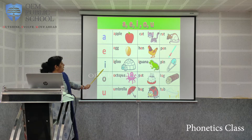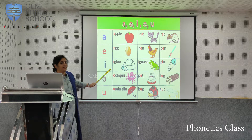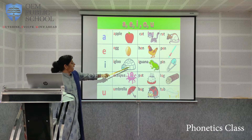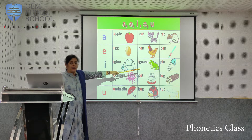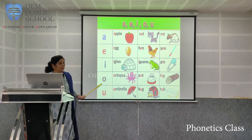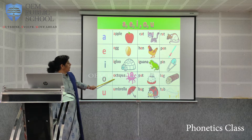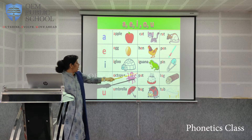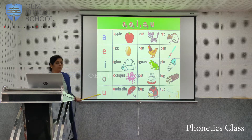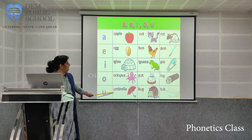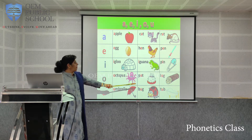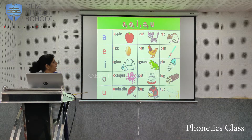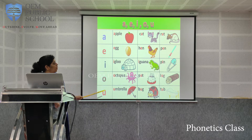Now coming to I — the sound of I we say as in igloo and iguana. Next is O, as in octopus and pot and log. Now we come to U — the U sound as in umbrella, bug, and tub. These words all use short vowel sounds.